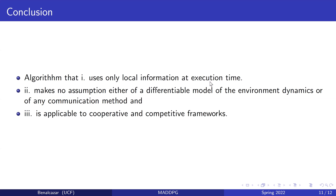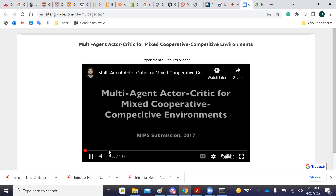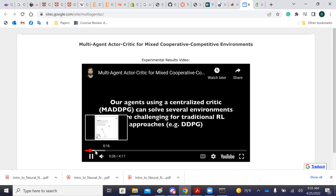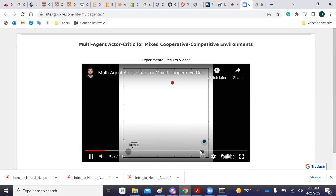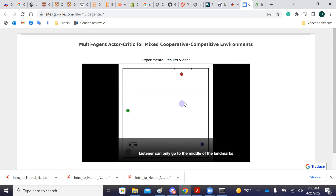In conclusion, the authors developed an algorithm that uses only local information at execution time, makes no assumptions about the environment dynamics or communication methods, and is applicable to both cooperative and competitive frameworks — because each agent can have its own reward function. A short demo video shows the listener successfully navigating to the correct blue landmark, while a comparison with DDPG shows failure to reach the correct landmark.